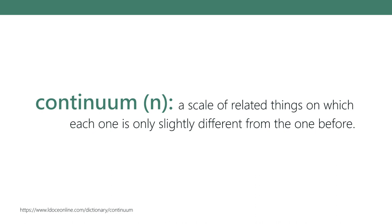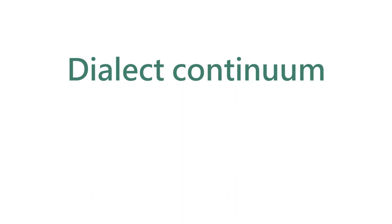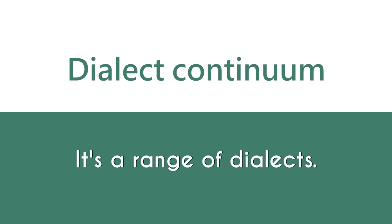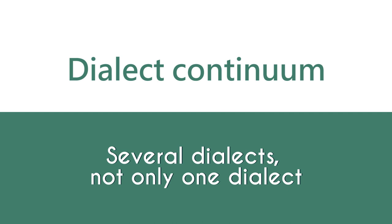A continuum is a continuous range of something. Here we're talking about a dialect continuum. In a dialect continuum, you have a range of dialects. You shouldn't think that 'dialect continuum' is just one dialect — 'dialect' is used as an adjective, a qualifier, for the word continuum.